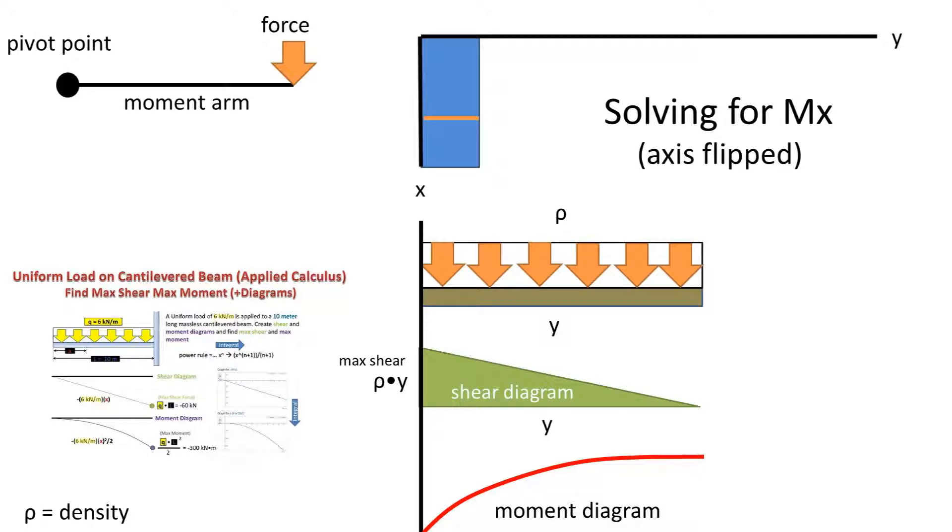Now let's solve for the moment about the x-axis for a rectangle using calculus. I'm going to rotate the x and y axis to make it much like a previous moment diagram video I made.